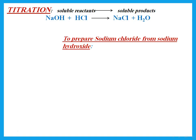Titration is used if all reactants and products are soluble. For example, if we want to prepare sodium chloride crystals, we react hydrochloric acid — because we need the acid that has chlorine — with sodium hydroxide, the base that has sodium. Bases are usually oxides or hydroxides. So sodium hydroxide with hydrochloric acid gives a solution of sodium chloride.